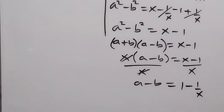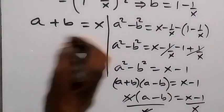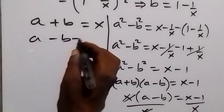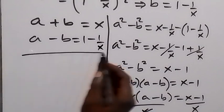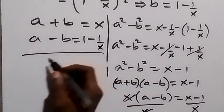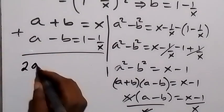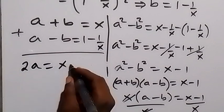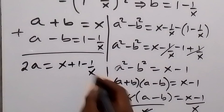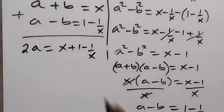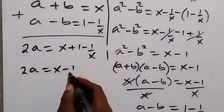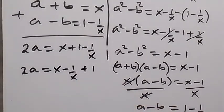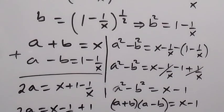Separating the fraction, a minus b equals 1 minus 1 over x. Now we have a system of two equations: a plus b equals x, and a minus b equals 1 minus 1 over x. Adding these two equations to eliminate b gives 2a equals x plus 1 minus 1 over x. Rearranging, 2a equals (x minus 1 over x) plus 1. Since a squared equals x minus 1 over x, we can replace x minus 1 over x with a squared.